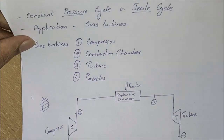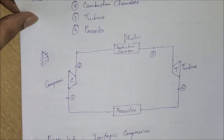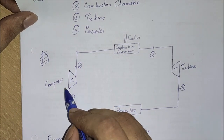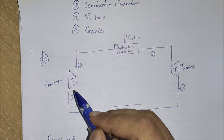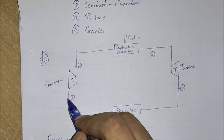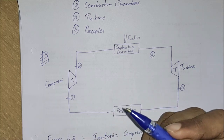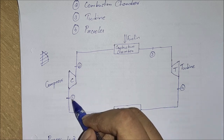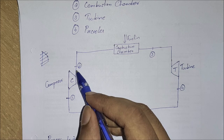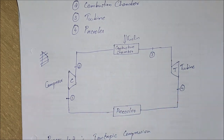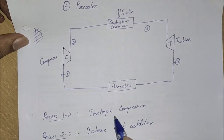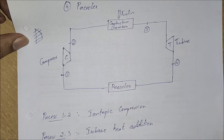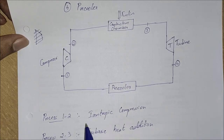Now let us draw a schematic diagram for a closed cycle gas turbine. The first component is the compressor. In a gas turbine, the working fluid is gas. Before entering the compressor, let the gas be at state one, and after compression let it be at state two. Process one to two in a Brayton cycle is basically an isentropic compression.